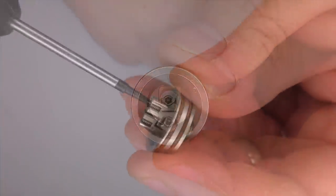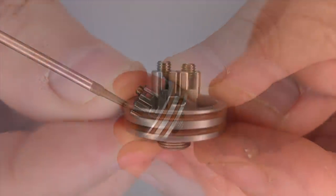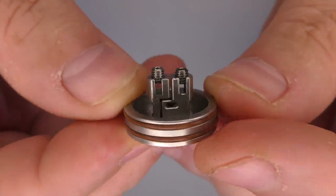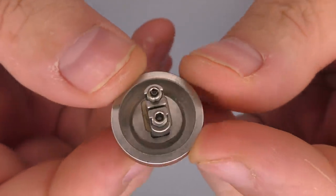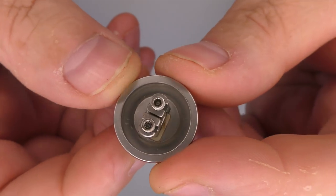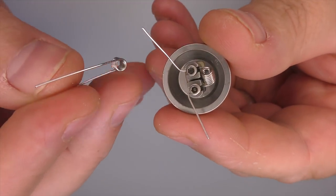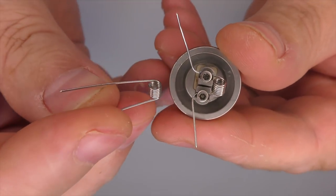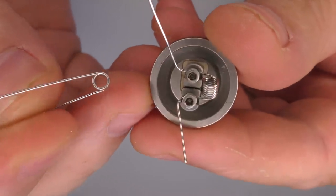So undo the grub screws here, just back them off. Maybe a bit of a closer look at what's going on here. You can see the deck. I'm sure the deck's deeper than the V1. I don't remember it being as deep as that, but I could be wrong. Personally for me, when I'm doing a dual coil, I like to use simple round wire builds.